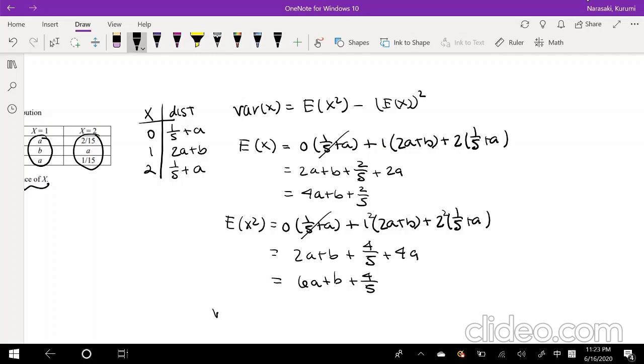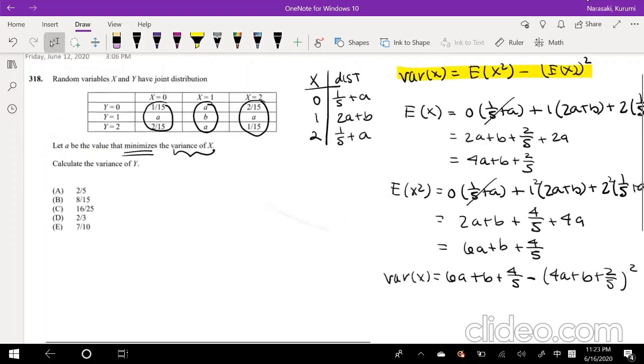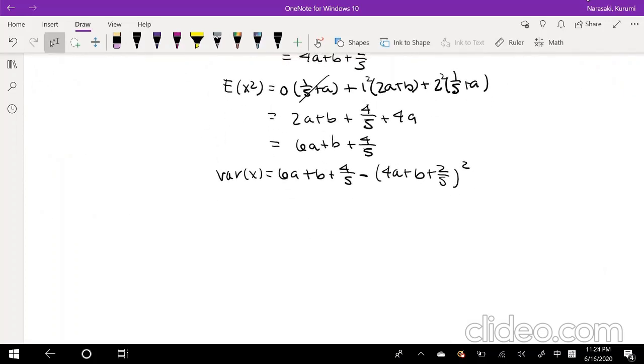Okay, so to find the variance, again, it's this formula right here. So we're going to plug our values in. E(X²), we know, we just found that right here: 6a plus b plus 4 fifths minus the expectation squared. So that's 4a plus b plus 2 fifths squared.